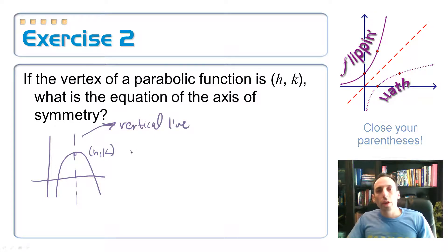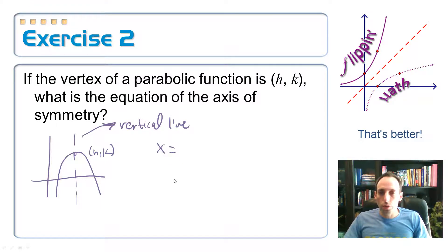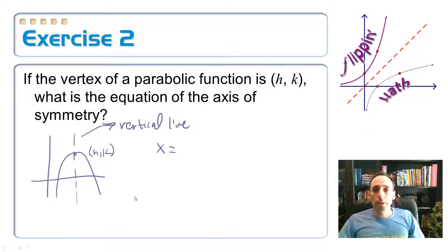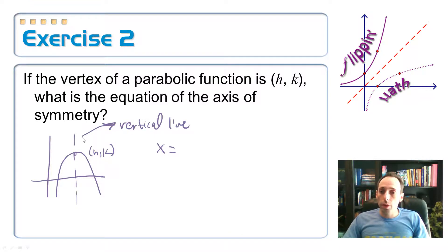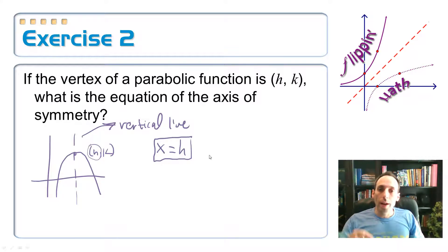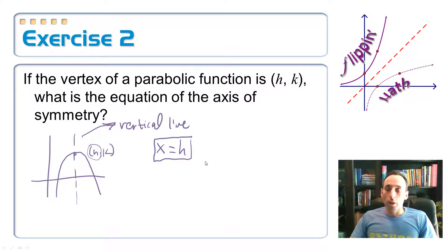And how do you write the equation of a vertical line? It's always x equals something, and that something is whatever x value it goes through. So let's look back at the picture. What x value is this line always going through? It's always going through the x value of your vertex, so in this case it's x equals h. So here is the equation for your axis of symmetry, where h is the x value of your vertex.